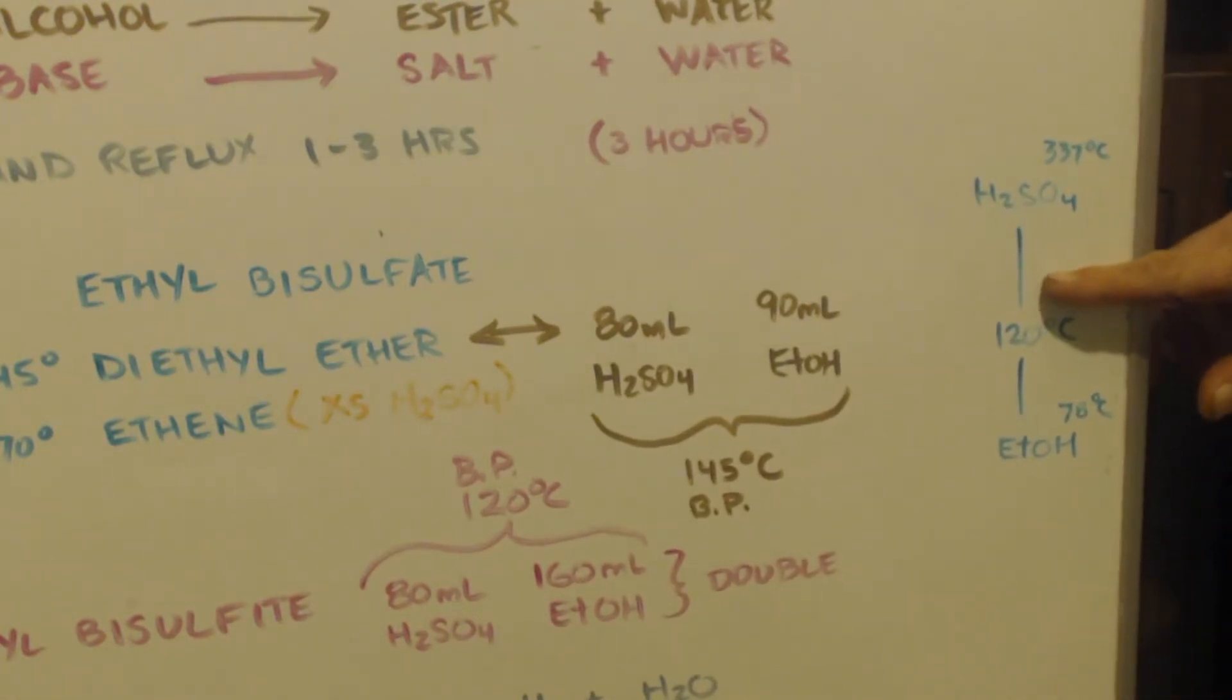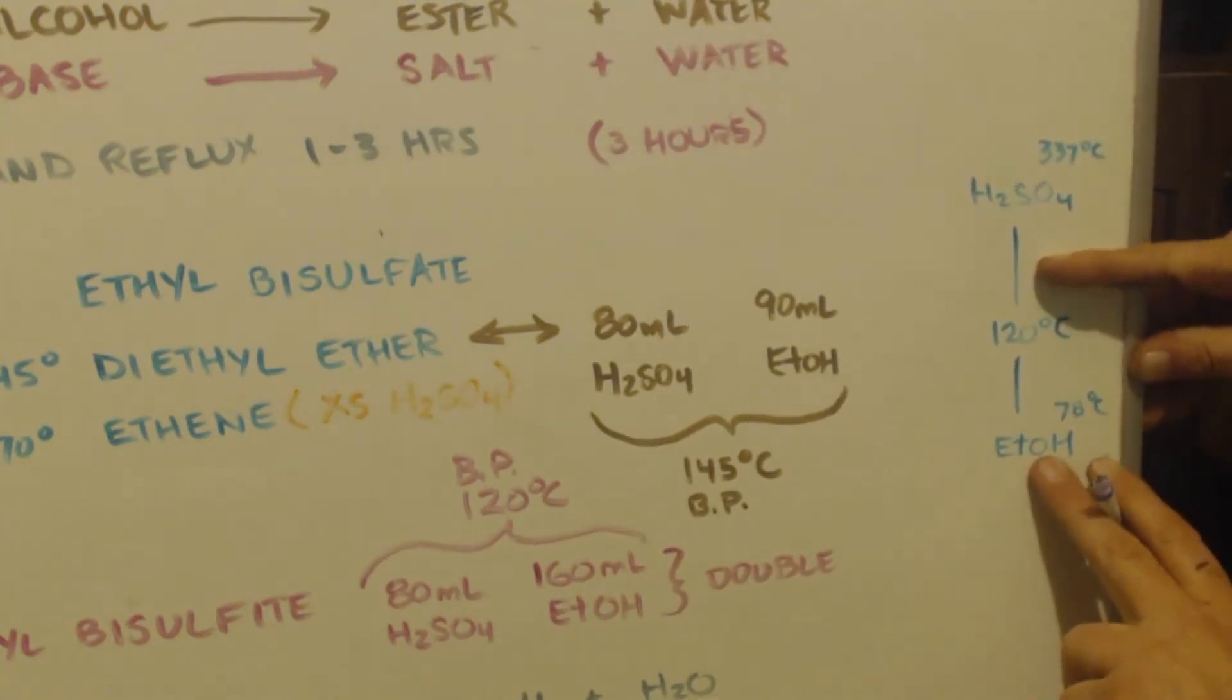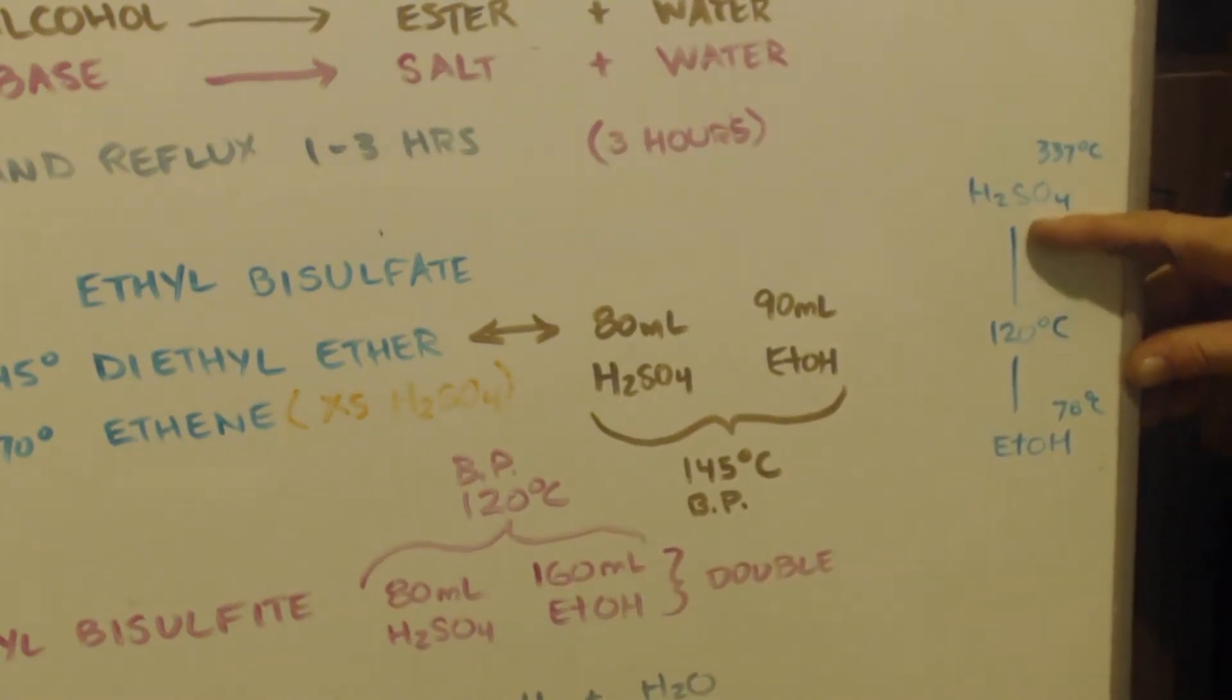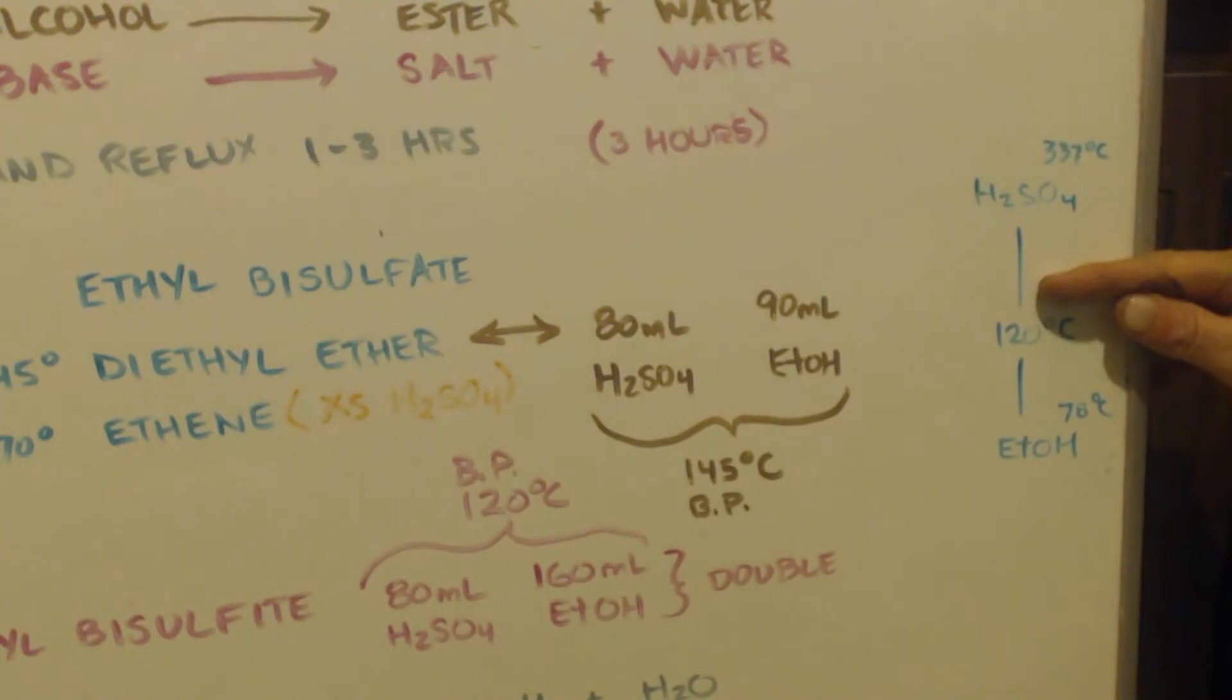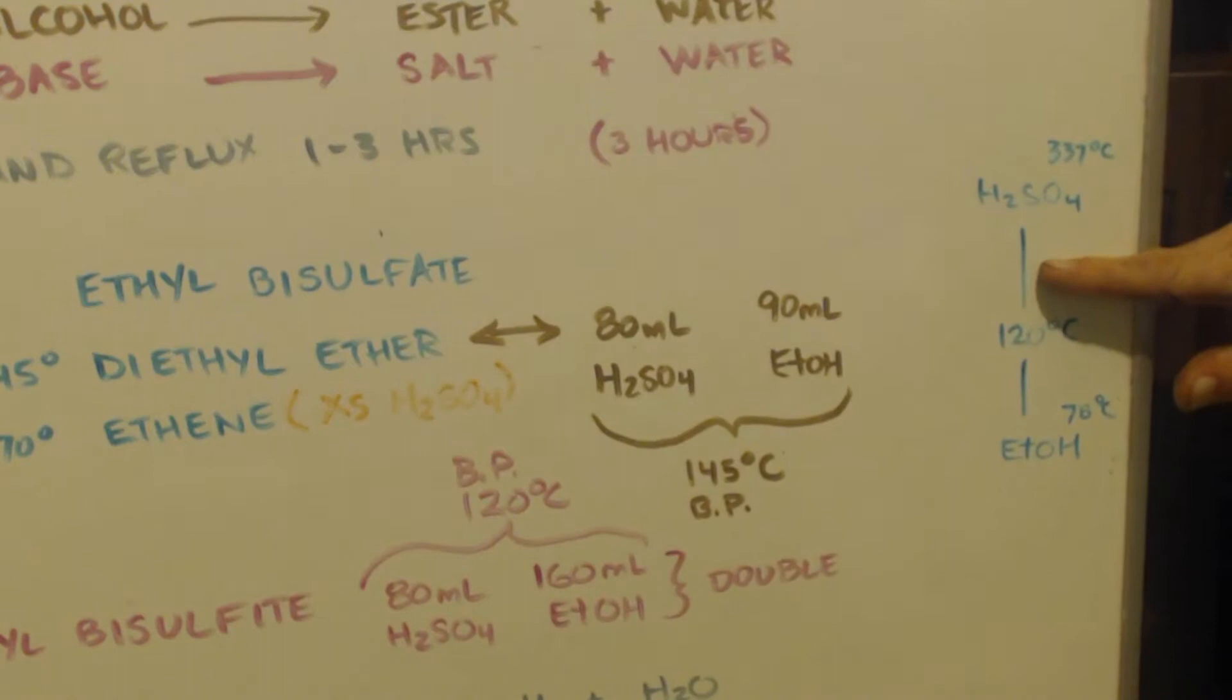So if you want to lower the boiling point of the pot, you add in the lower boiling point thing, the ethanol. If you wanted to raise the boiling point of the pot, you'd add more sulfuric acid in it. So all you have to do, if you're here with 80 and 90, obviously, you need to add more ethanol so it gets the boiling point down to 120°C. That's where you want to reflux it at.